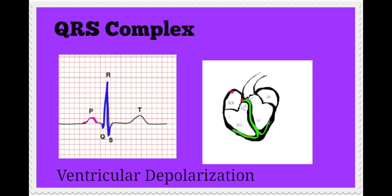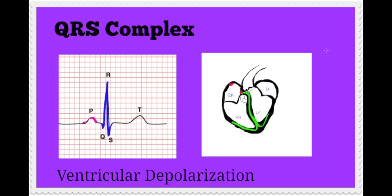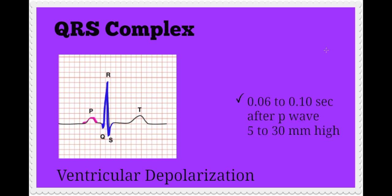As electricity moves past the AV node, it quickly travels through the bundle of Hiss and Purkinje fibers to cause contraction of the ventricles. This is also known as ventricular depolarization. When assessing the QRS complex, it should be between 0.06 and 0.10 seconds. It occurs after every P wave and can range between 5 and 30 millimeters in height.